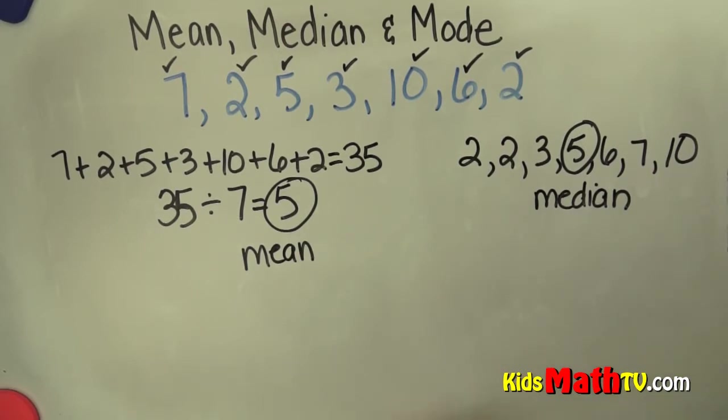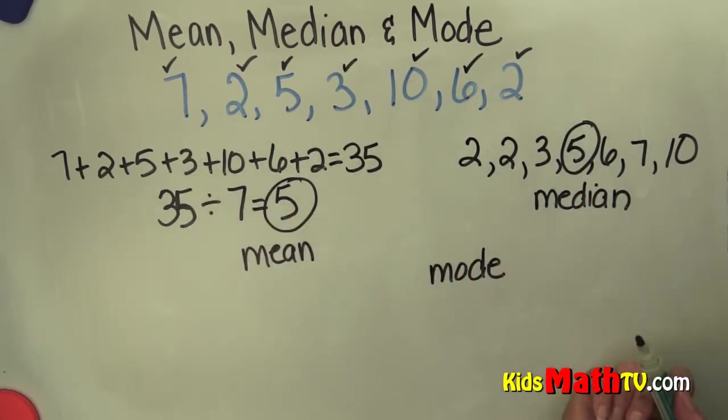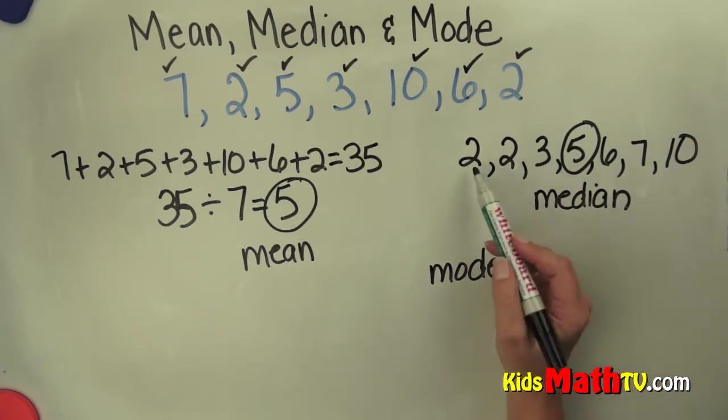The mode is the easiest. Mode is simply the number that happens the most in a set of numbers. So what is the number that happens the most in this set?